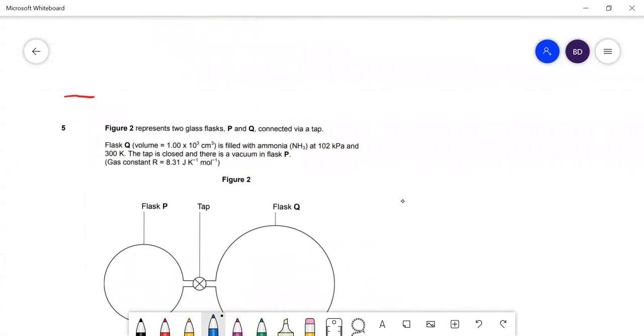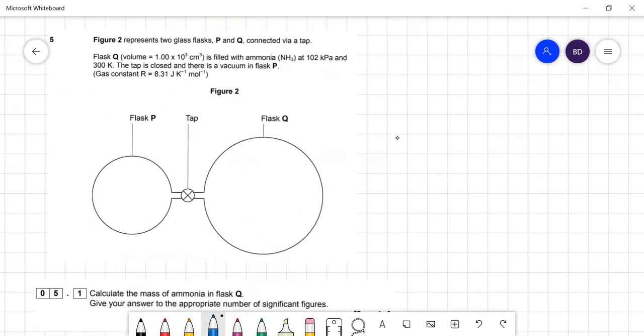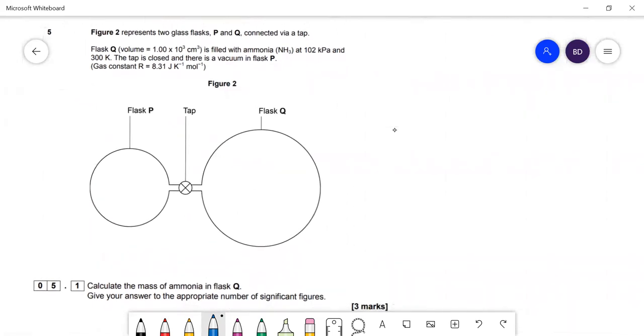Ideal gas calculation. You've got two flasks with a tap. P is empty, and in Q we have ammonia. Calculate the mass of ammonia in flask Q. We need to find the number of moles using the ideal gas equation: PV equals nRT, so n equals PV over RT.